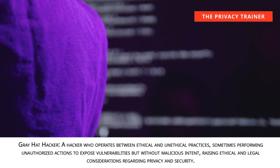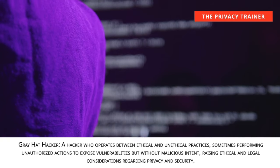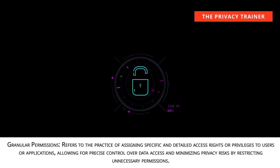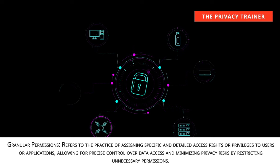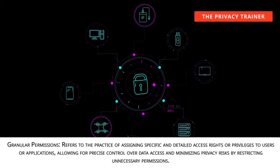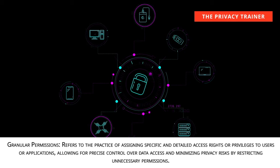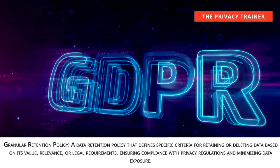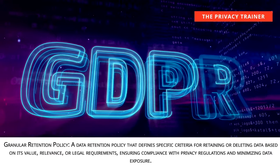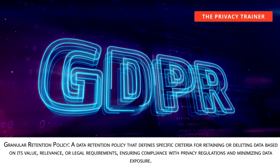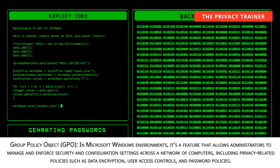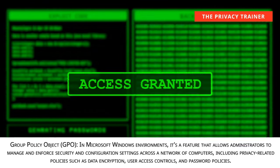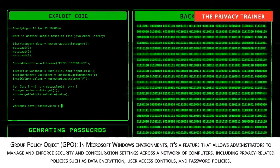Grey Hat Hacker. A hacker who operates between ethical and unethical practices, sometimes performing unauthorized actions to expose vulnerabilities but without malicious intent, raising ethical and legal considerations regarding privacy and security. Granular permissions. Refers to the practice of assigning specific and detailed access rights or privileges to users or applications, allowing for precise control over data access and minimizing privacy risks by restricting unnecessary permissions. Granular Retention Policy. A data retention policy that defines specific criteria for retaining or deleting data based on its value, relevance, or legal requirements, ensuring compliance with privacy regulations and minimizing data exposure. Group Policy Object, GPO. In Microsoft Windows environments, it's a feature that allows administrators to manage and enforce security and configuration settings across a network of computers, including privacy-related policies such as data encryption, user access controls, and password policies.